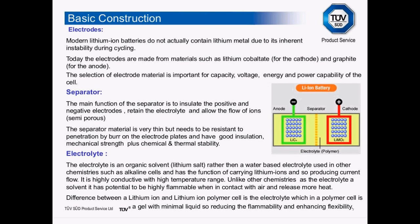You'll often hear the terms lithium-ion and lithium-ion polymer. The difference is essentially the electrolyte: in a polymer cell it is more of a gel with minimum liquid, which has the effect of reducing the potential for flammability. It is also often used in pouch cells, which enhances the flexibility of the cell over traditional cell manufacturing processes.